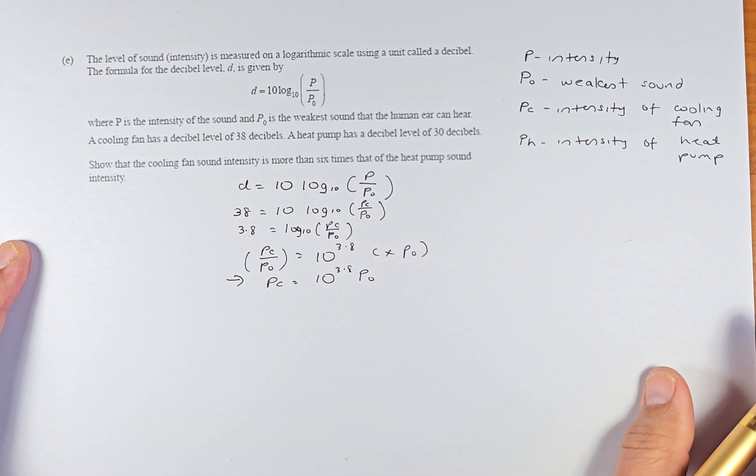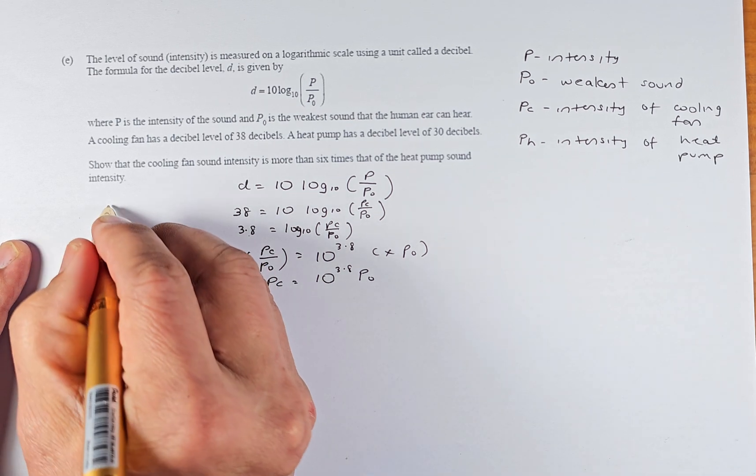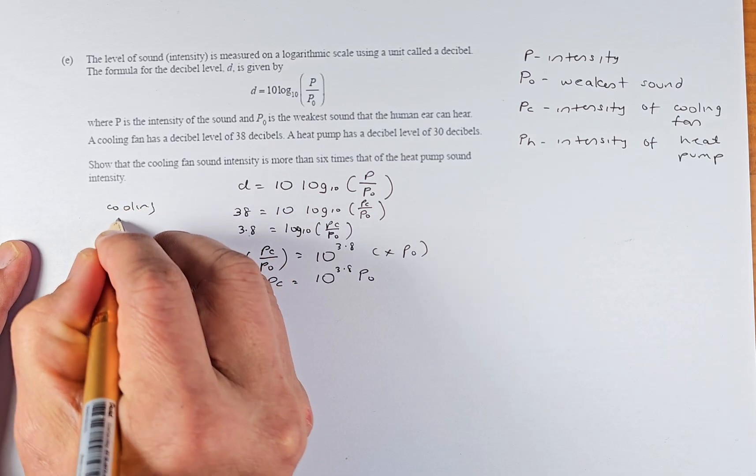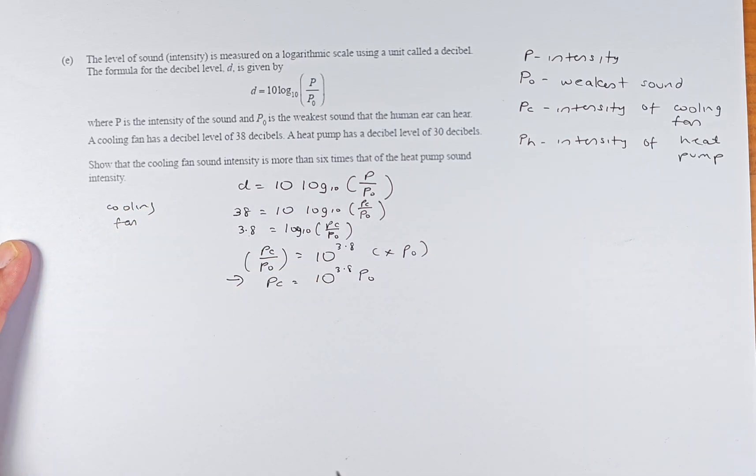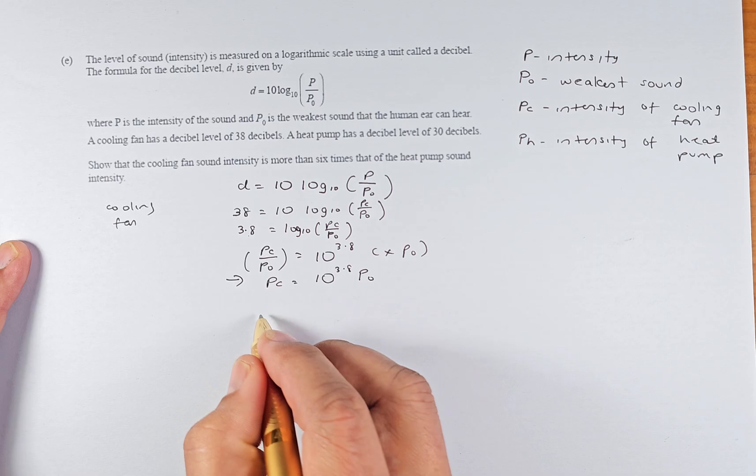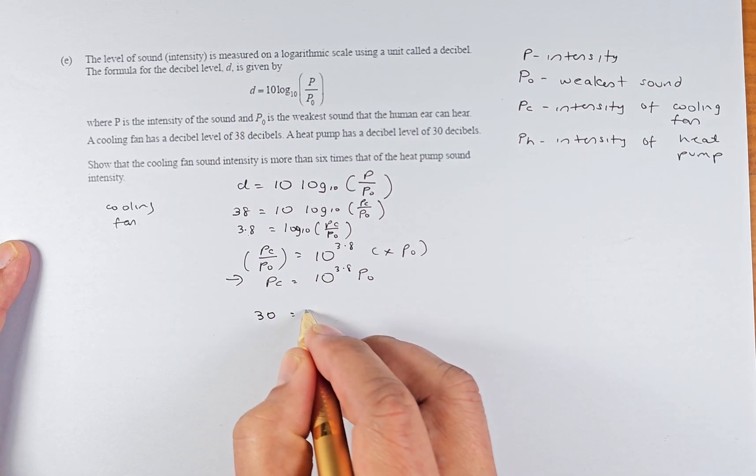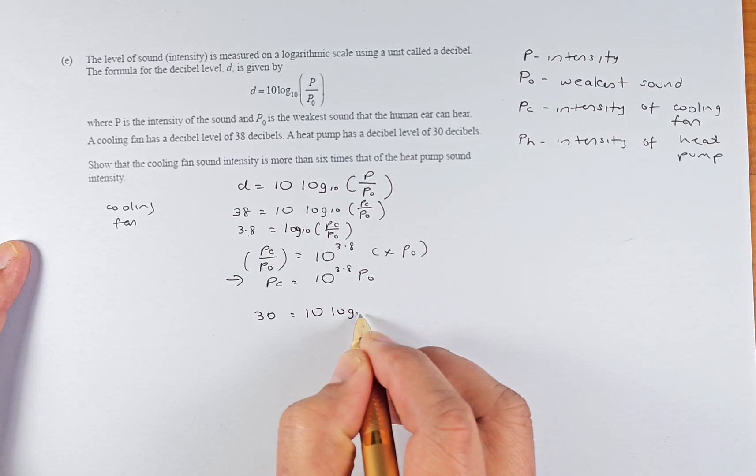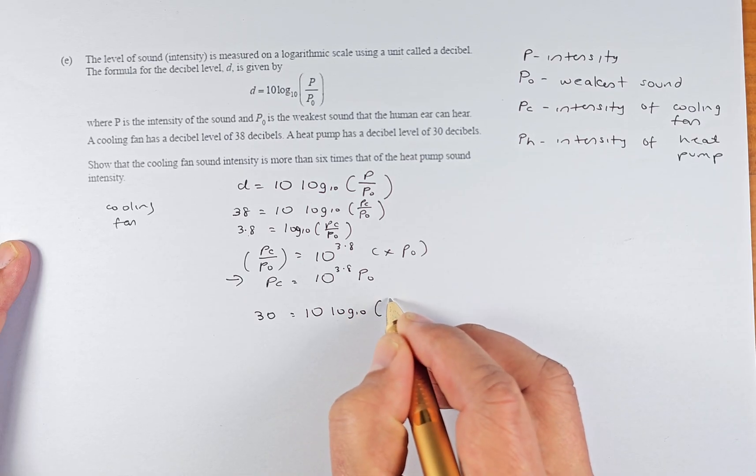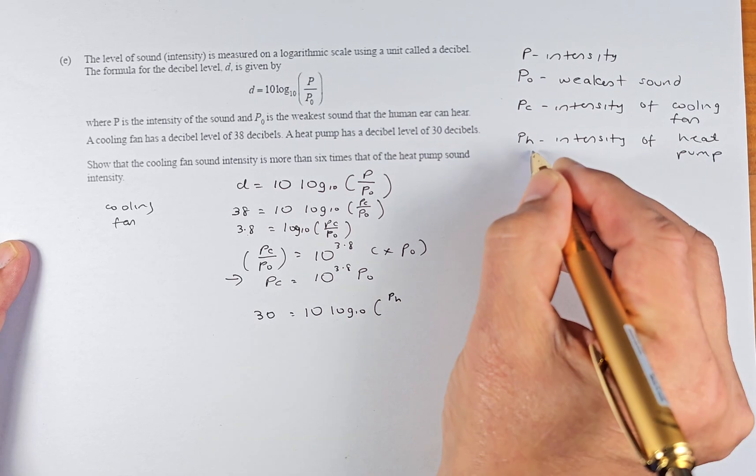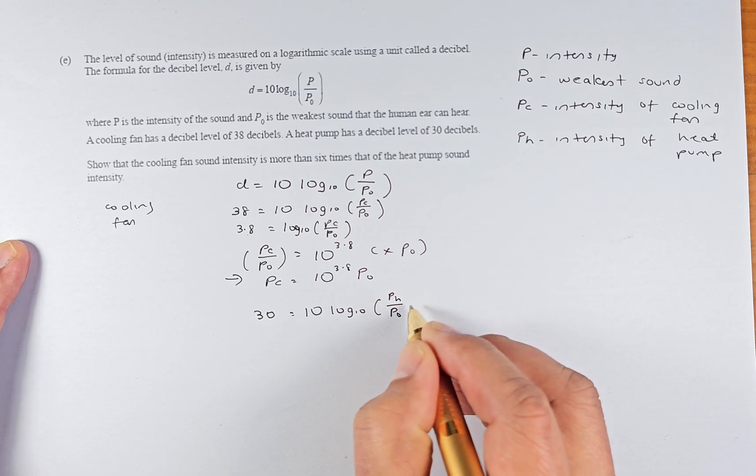Now we're going to do the same for the heat pump. For the heat pump, the decibel is 30, so we substitute 30 into this formula: 30 = 10 log₁₀(Ph/P₀).